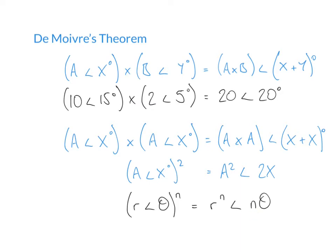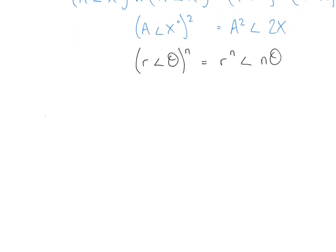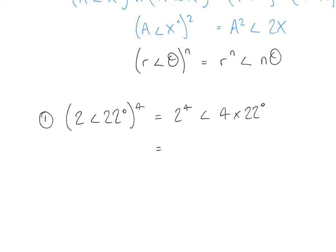Let's see this more clearly with examples. Our first example is 2 at an angle of 22 degrees, raised to the power 4. Following De Moivre's theorem, our modulus is raised to the power 4 — that's 2 to the power 4 — and our angle is multiplied by 4, giving 4 times 22 degrees. So 2 to the power 4 is 16, and the angle 4 times 22 is 88, giving us 16 at an angle of 88 degrees.